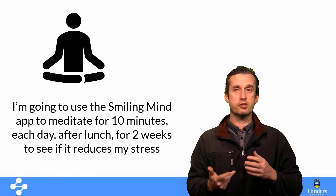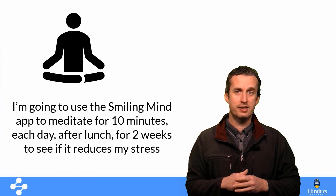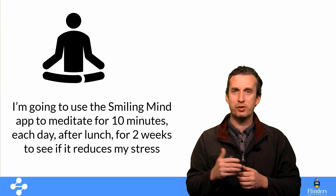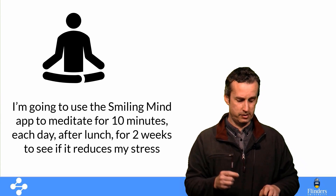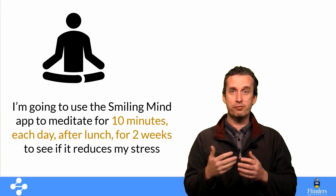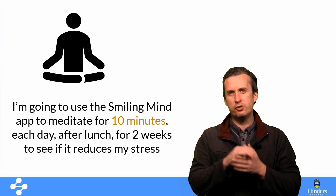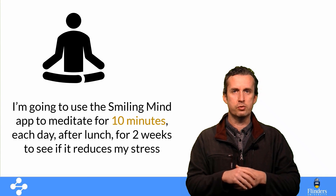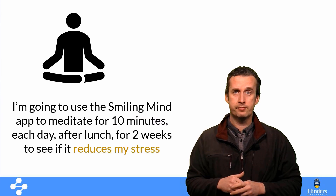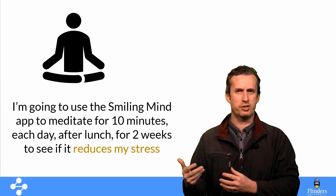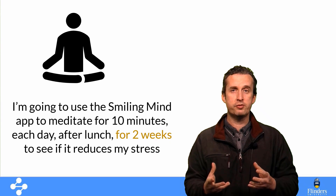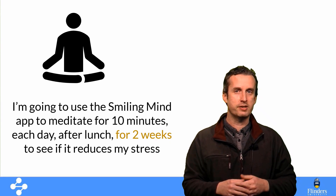For example: I'm going to use the Smiling Mind app to meditate for 10 minutes each day after lunch for two weeks to see if it reduces my stress. Yes, that's a lot longer than the previous goal, but it has all the important SMART elements. It's measurable — you'll know by the end of two weeks whether you meditated each day for the requisite time. It's achievable — you didn't set a goal of meditating for an hour or going on a three-month retreat; you set 10 minutes. It's relevant because you attached it to stress management. And it's time-bound because you set two weeks as the period to test whether meditation is helpful.